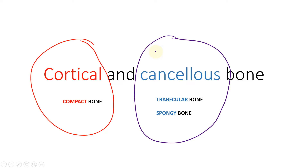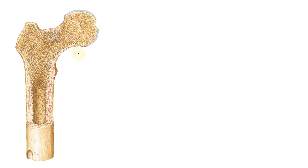Now we look at what is cortical and what is cancellous in a diagram. This is a longitudinally cut section of the femur. You can very clearly see that the diaphyseal part has a very thick arrangement of bone, and that is called compact bone. It is on the outside of the bone, which is why it is called cortical bone.